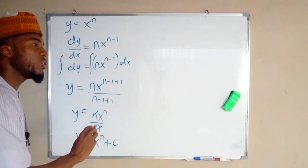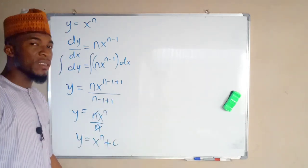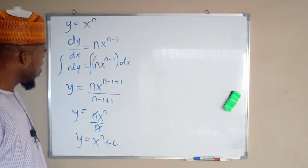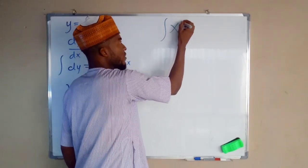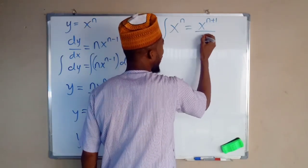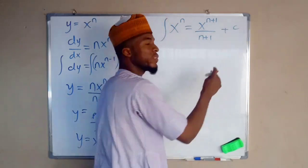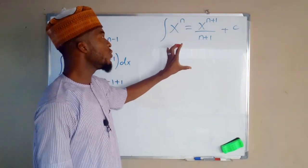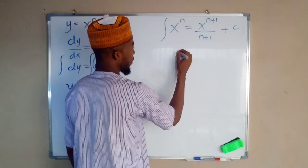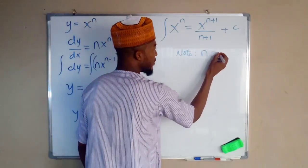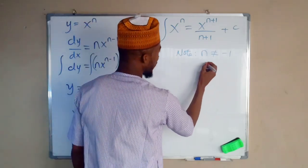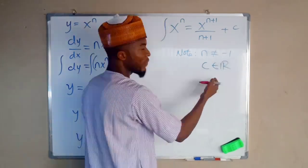But in integration, this is the function we had initially — however in integration we have to add a constant of integration, which we most often call C, and C is a subset of real numbers. In general, if you are to integrate x to the power of n, this will be x to the power of n plus one, divided by n plus one, plus the constant of integration C. This is the formula we are going to use for integrating an algebraic function, but n is not equal to negative one, because if it is, negative one plus one is zero and x to the power of zero is one.